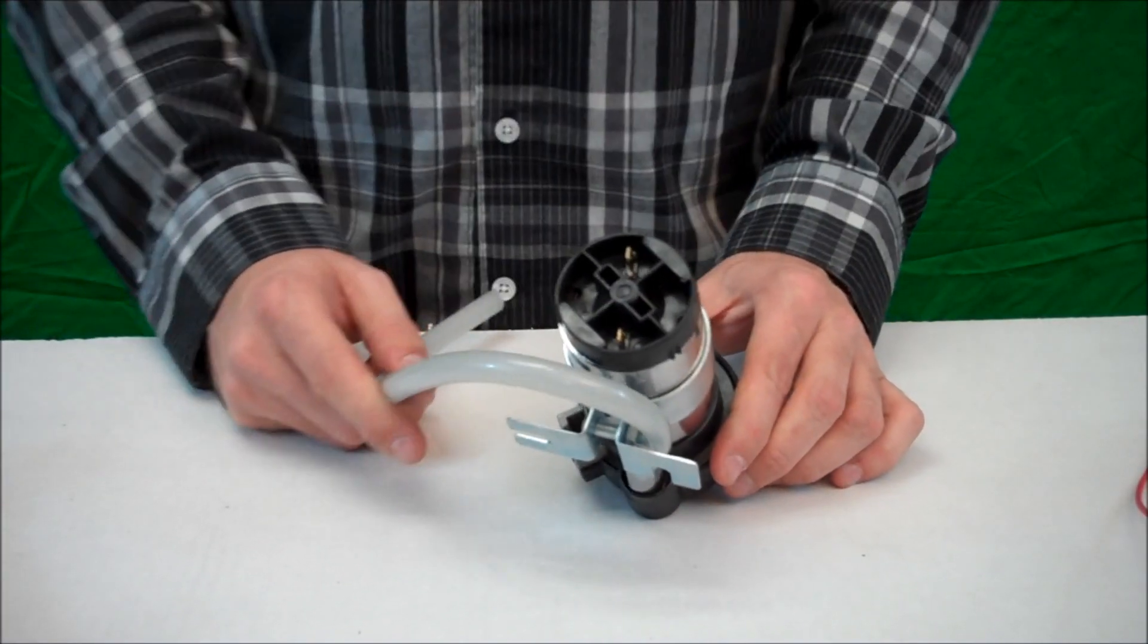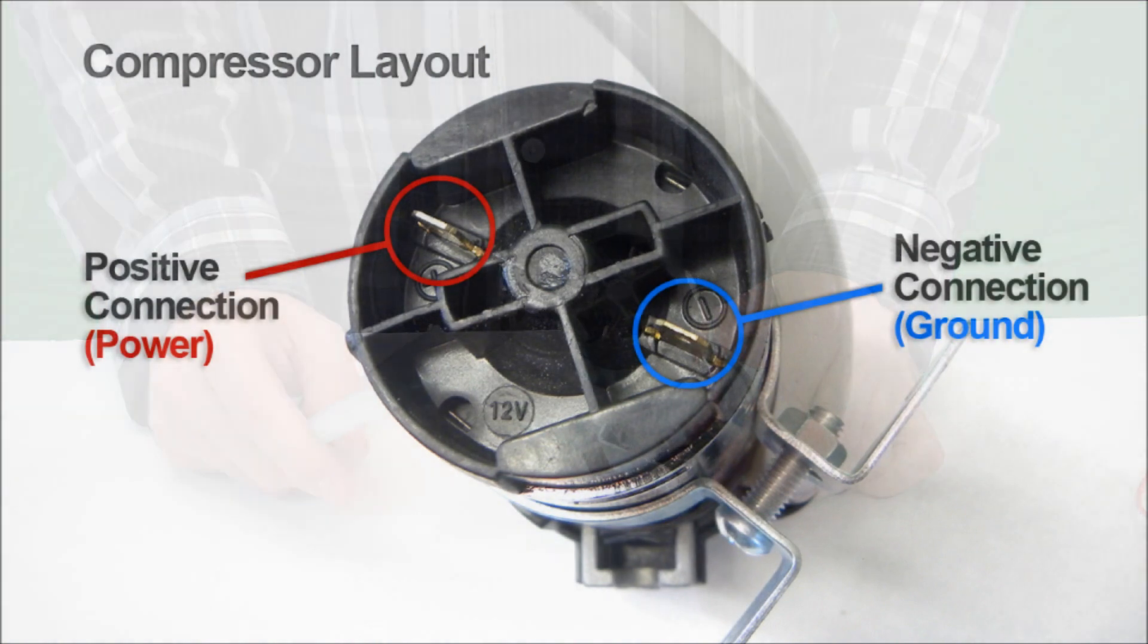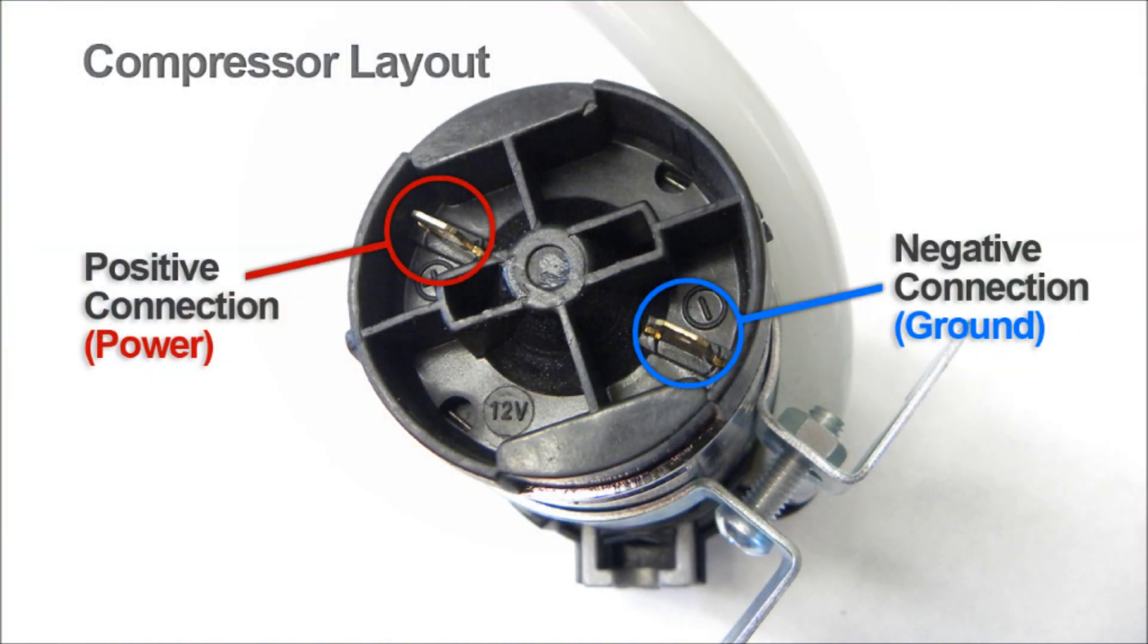The compressor and solenoid is easily wired to any 12-volt system. There are two terminals, one is marked positive, one is marked negative. The positive will be your red wire and the black wire will be your ground.